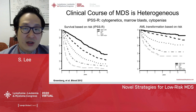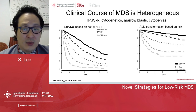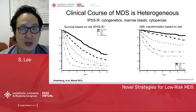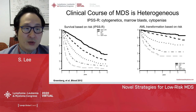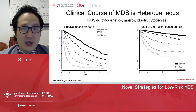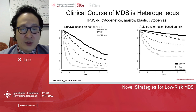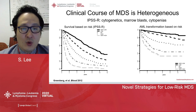Patients with lower-risk MDS by IPSS-R typically have longer overall survival and are less likely to have transformation to AML. When we refer to MDS patients as having lower-risk MDS, we typically include patients with very low, low, and some patients with intermediate risk by IPSS-R, and often these patients have decreased blasts in their bone marrow.